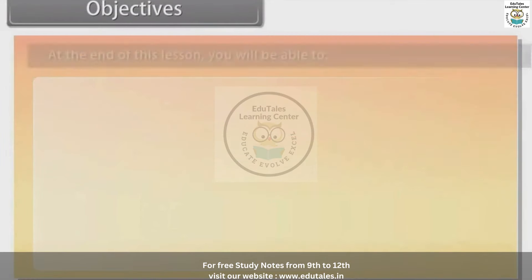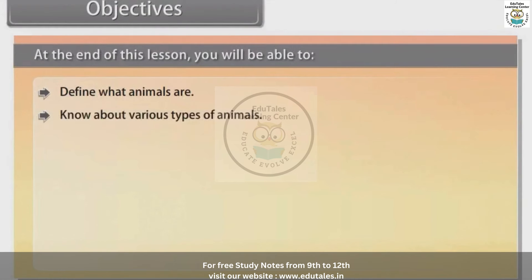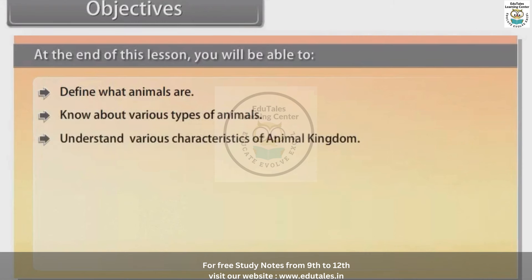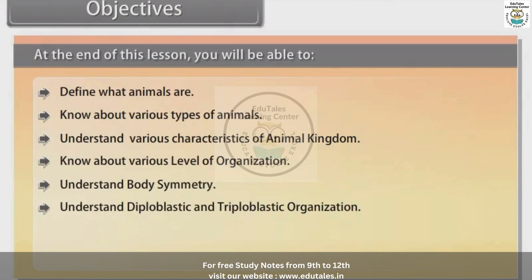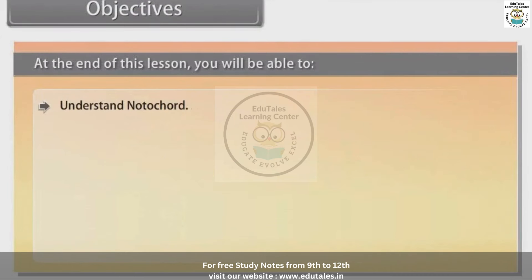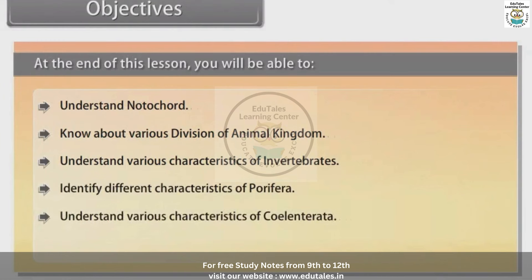Objectives: At the end of this lesson, you will be able to define what animals are, know about various types of animals, understand various characteristics of the animal kingdom, know about various levels of organization, understand body symmetry, understand diploblastic and triploblastic organization, know about coelom, understand segmentation, understand notochord, know about various divisions of the animal kingdom, understand characteristics of invertebrates, and identify characteristics of Porifera, Coelenterata, and Ctenophora.